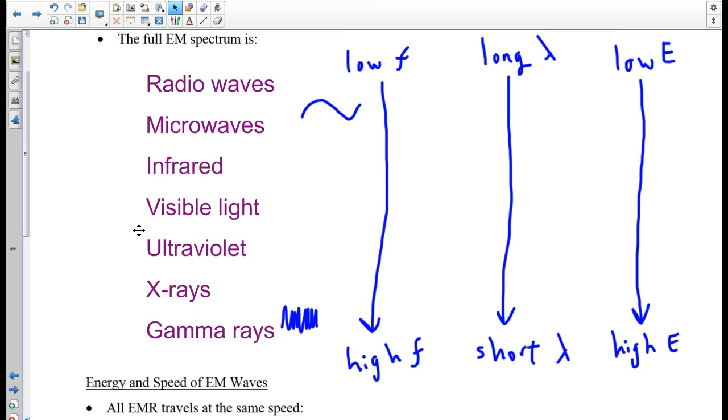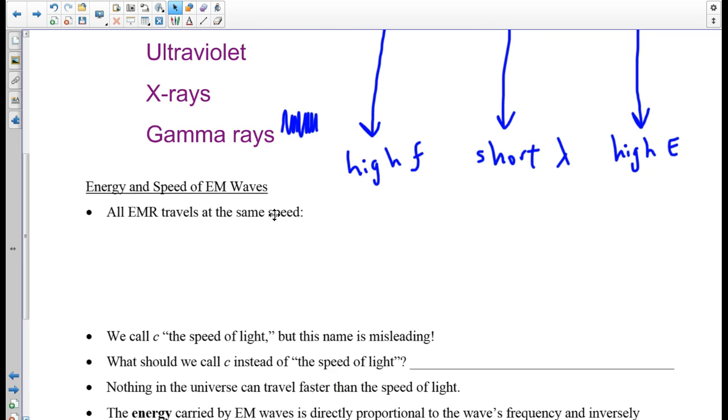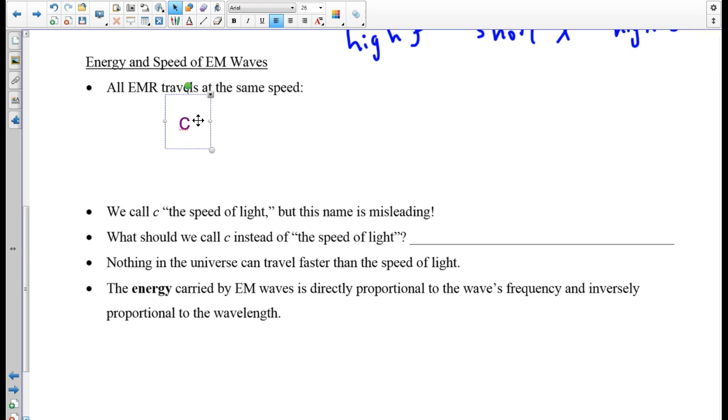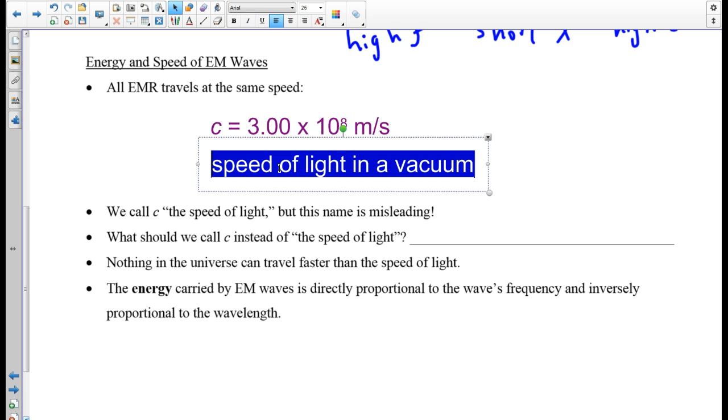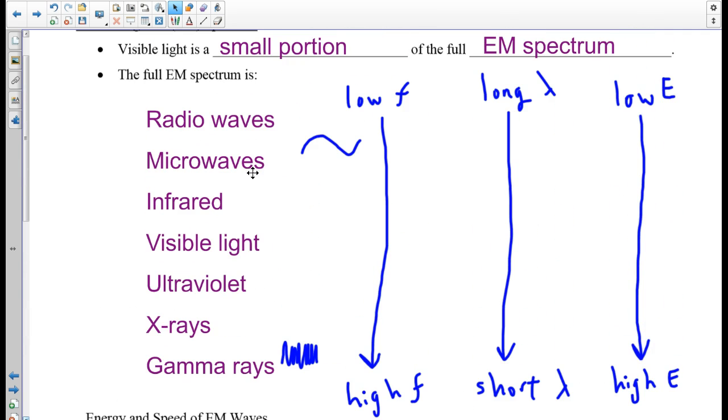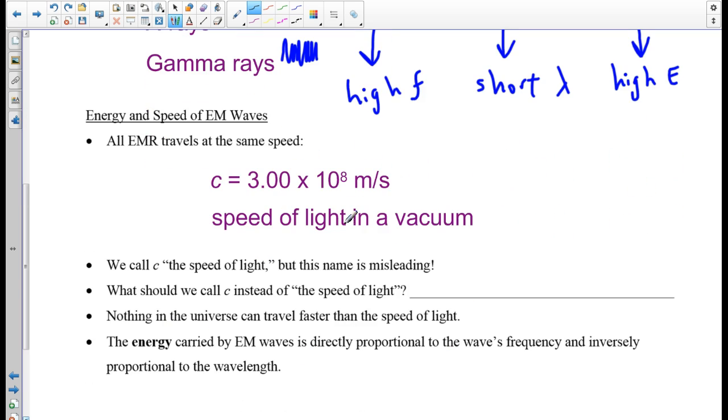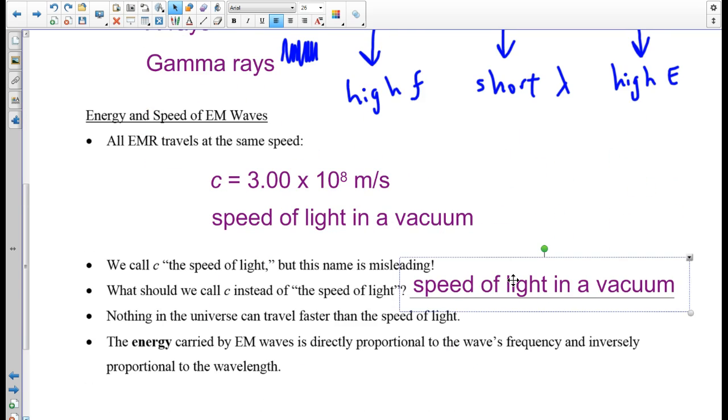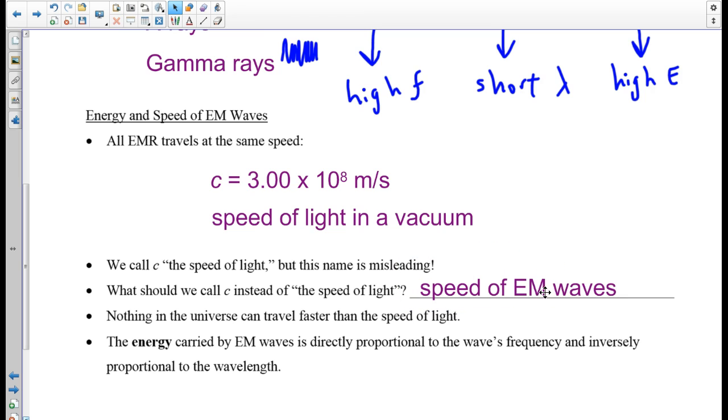So a question, which one do you think travels fastest? That's a trick question. They all travel at the same speed in a vacuum. The speed of electromagnetic radiation in a vacuum is 3.00 times 10 to the power of 8 meters every second. We use the letter C because this is the wave speed, and this is the speed we call the speed of light in a vacuum. But the speed of light is a misleading name. Because this is the speed, not only of visible light, it's also the speed of radio waves, and x-rays, and infrared, all of it travels at this same speed in a vacuum. So we really should call it the speed of EM waves.